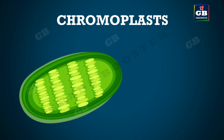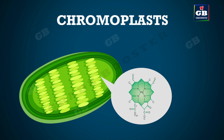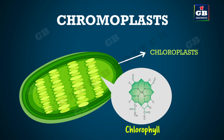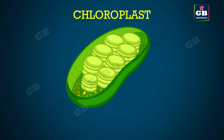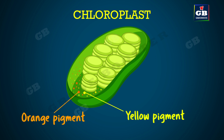The chromoplasts that contain more chlorophyll and carry on photosynthesis are called as chloroplasts. Chloroplasts are green in color due to the presence of chlorophyll. Some chloroplasts contain yellow or orange colored pigments also along with chlorophyll.